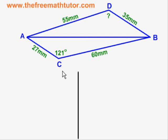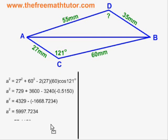We are set up to do cosine law as shown with these calculations. With side AB as our unknown side, when we go through our cosine law calculations, we end up with side AB equal to 77.4450 mm.